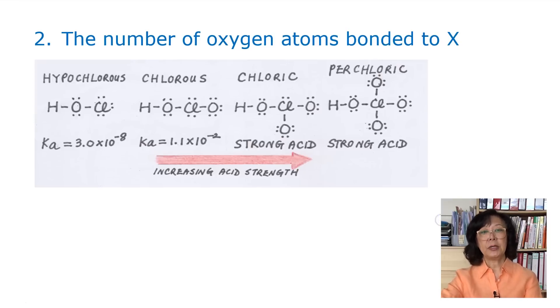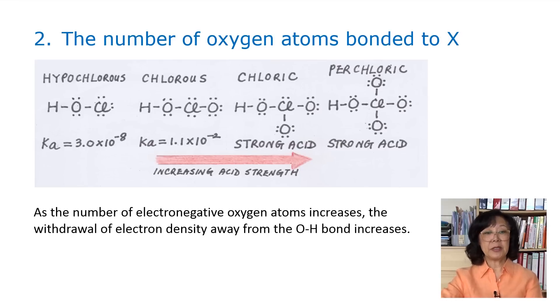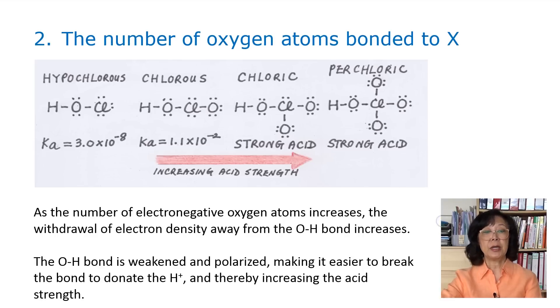We look at the next group: hypochlorous acid HOCl, chlorous acid HClO2, chloric acid HClO3, and perchloric acid HClO4. When we draw this Lewis dot structure, please pay attention that the H, the acidic proton, must be bonded directly to the O atom. As you look at the numbers, when we go across to the right, it's becoming stronger and stronger acid. This is because the number of electronegative oxygen atoms increases. The withdrawal of the electron density away from the OH bond would also increase. The OH bond is now weakened and polarized, making it easier to break the bond to donate the hydrogen ion and thereby increasing the acid strength.